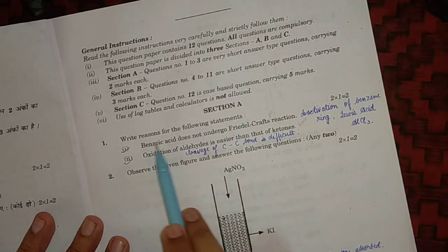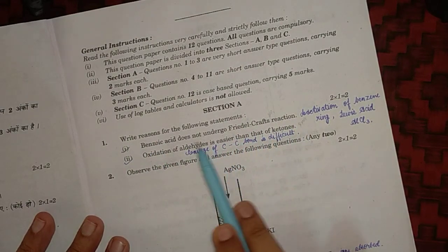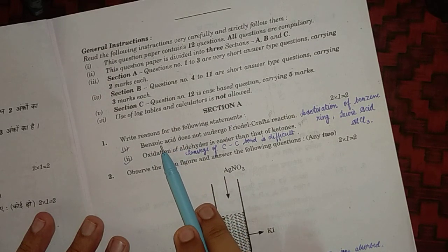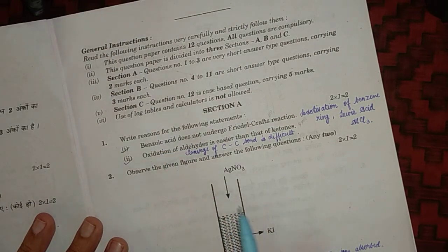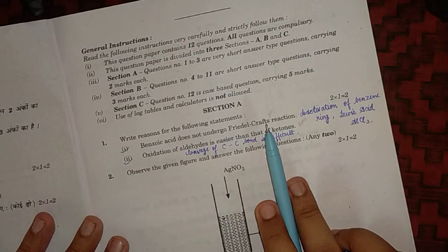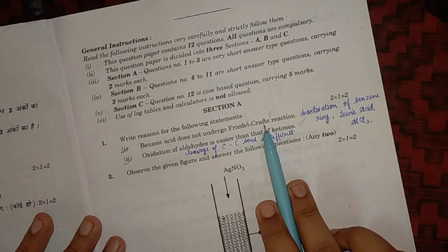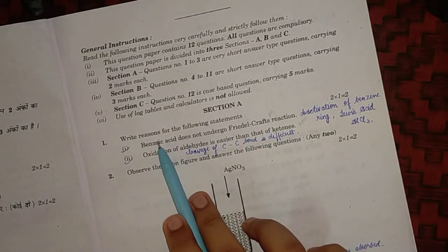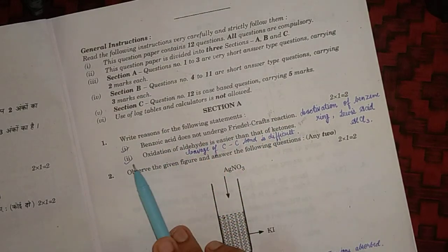The main reason is because benzoic acid is a deactivating group. Also, anhydrous AlCl3 used in the reaction of Friedel-Crafts is a Lewis acid, so it reacts with benzoic acid to form bonds. Second part: oxidation of aldehyde is easier than that of ketone.